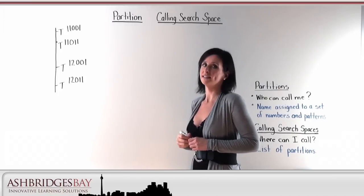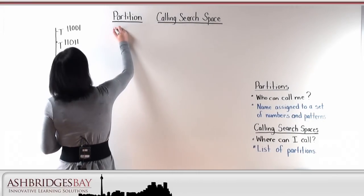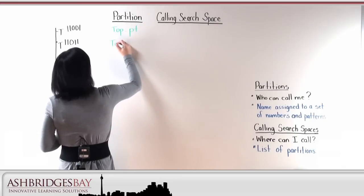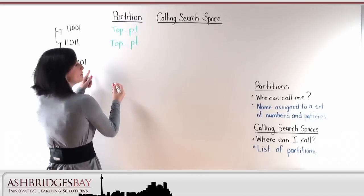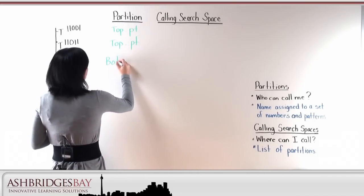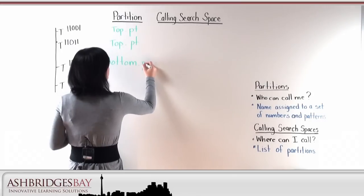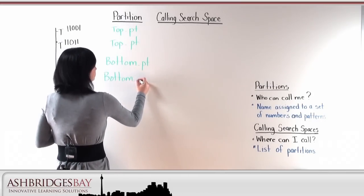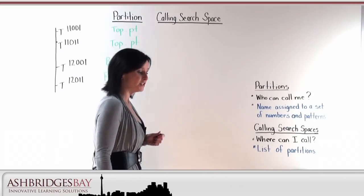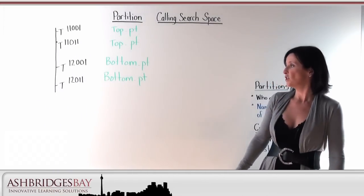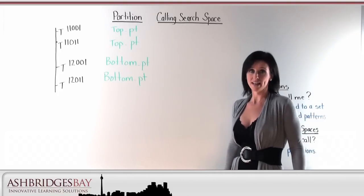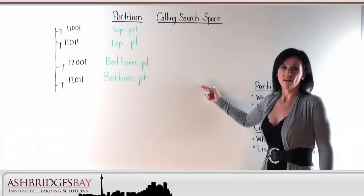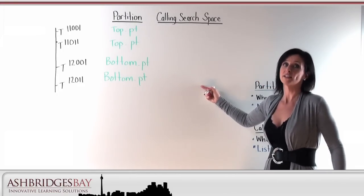So let's assign these numbers some partitions. I'm going to put these two numbers in the top partition and these two numbers in the bottom partition. Remember that a partition is just a name assigned to a set of numbers. Now that I've assigned partitions, who can call whom? Nobody can call anybody because I haven't assigned a calling search space. That brings us to rule number two: you can only call a number if that number's partition is in your calling search space.